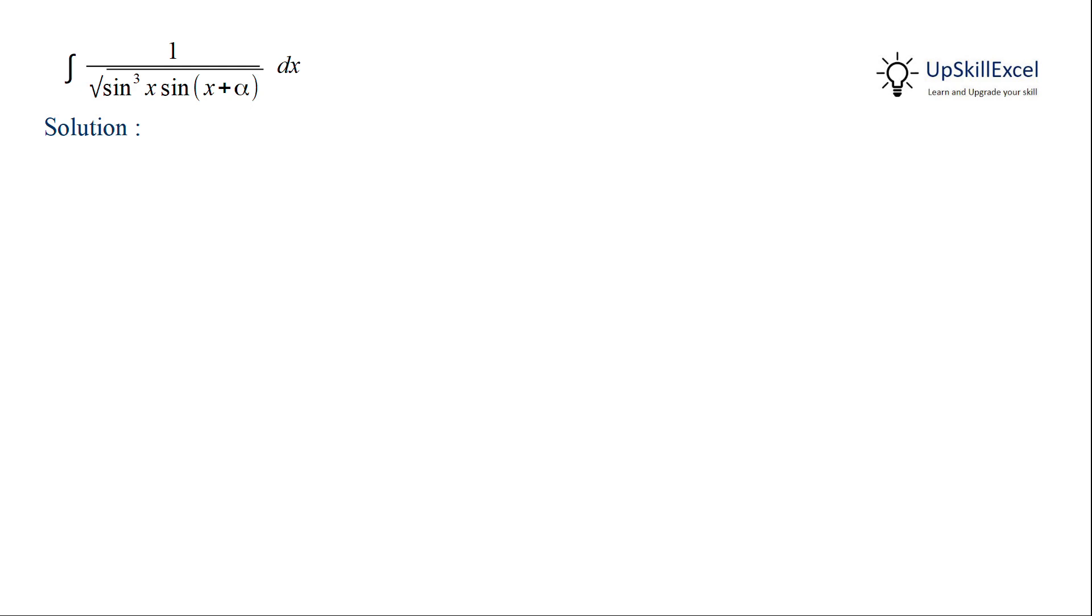To integrate this, first we'll rearrange the terms so that it's easy to do a substitution. For this, we'll multiply both numerator and denominator by the square root of sin x. Now in the denominator we have the square root of sin x raised to the power of 4, which will get simplified to sin squared x.